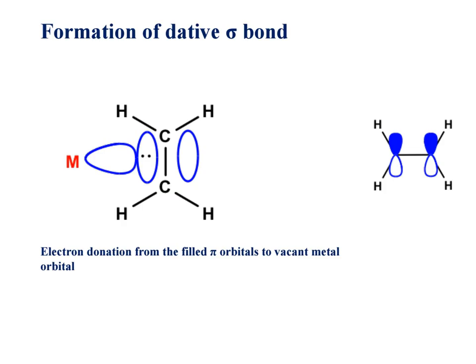First, we focus on formation of dative bond or formation of sigma bond. The ligand donates its electrons to metal, which forms sigma bond.